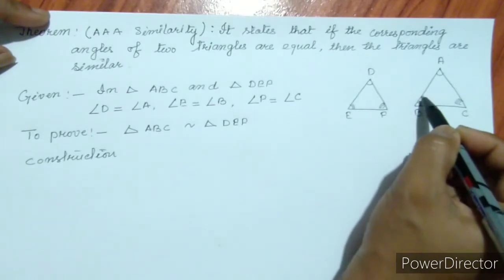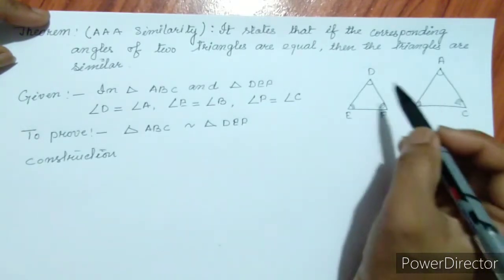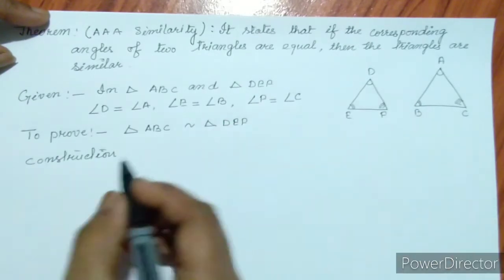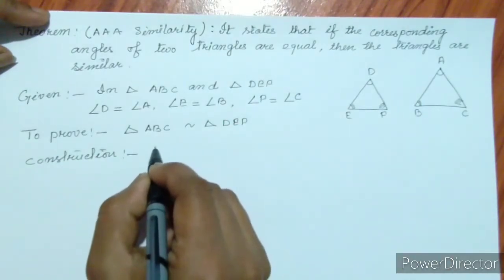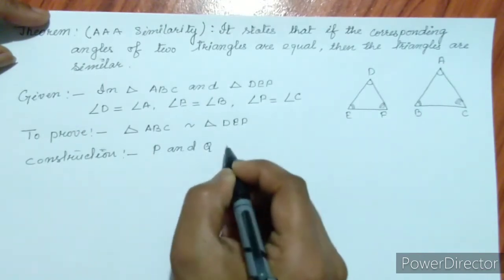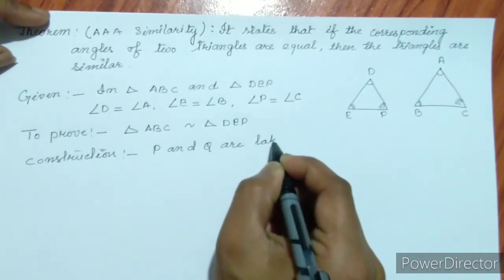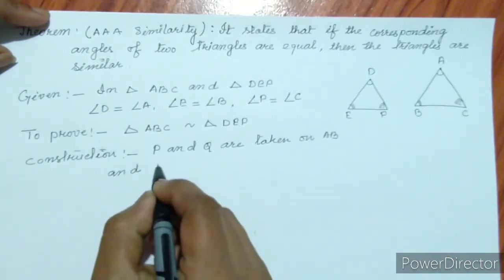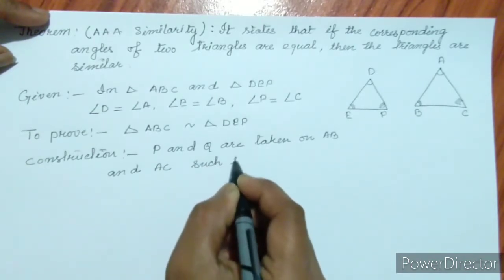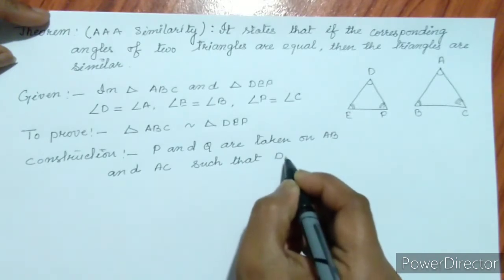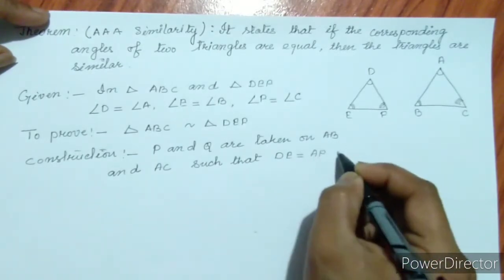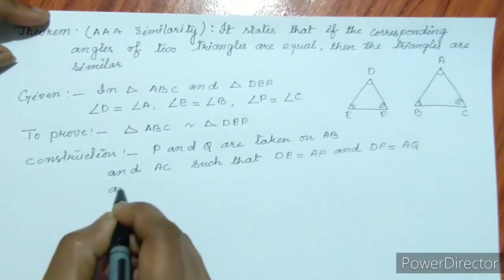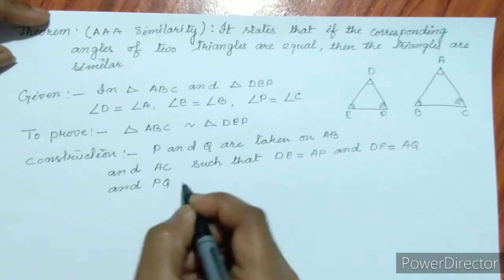For construction: P is taken on AB and Q is taken on AC such that AP equals DE and AQ equals DF. Then PQ is joined.